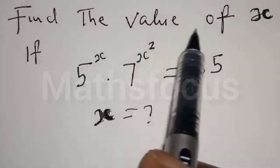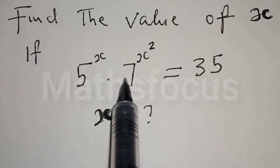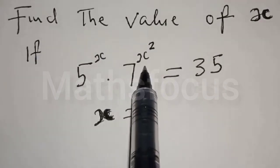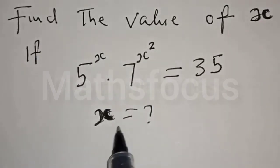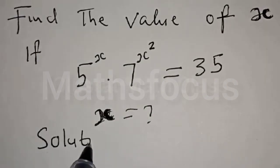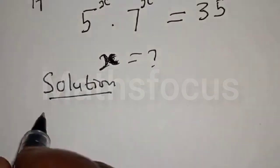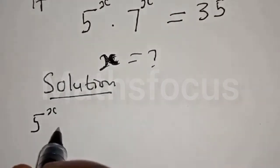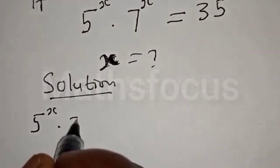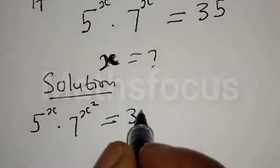Find the value of x if 5 raised to power x multiplied by 7 raised to power x squared is equal to 35. What is the value of x? We have 5 raised to power x multiplied by 7 raised to power x squared is equal to 35.